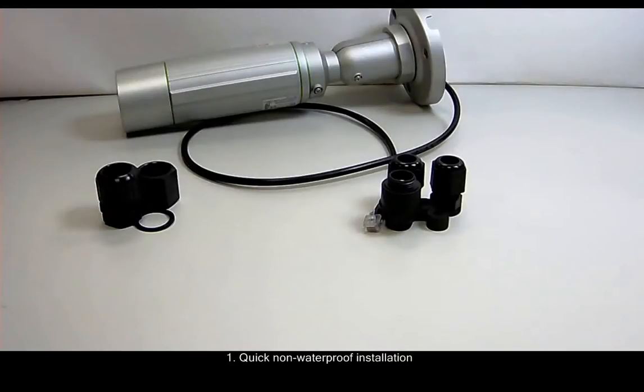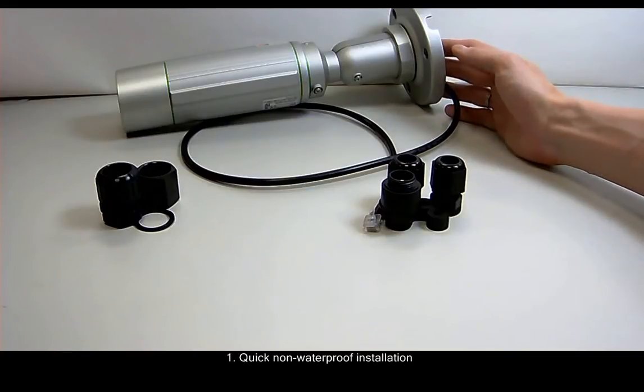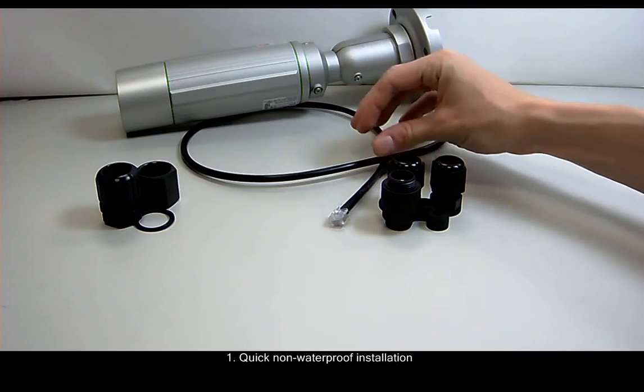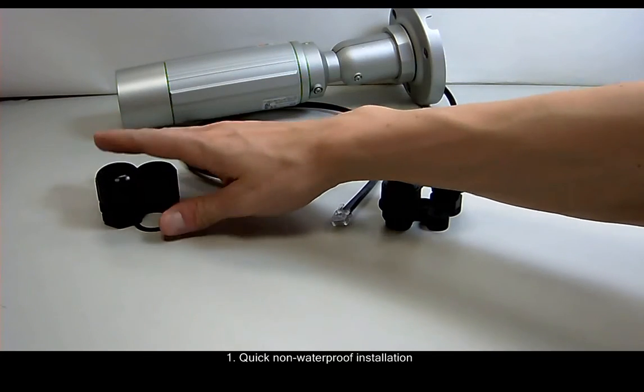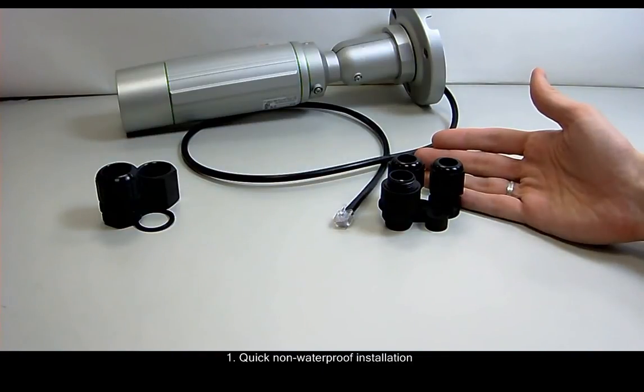The first one is the easiest one. It is the non-waterproof installation. We have the camera here with the cable out with the RJ45 male type. And in the camera package you can find two packs of accessories that can be used for doing the cabling.